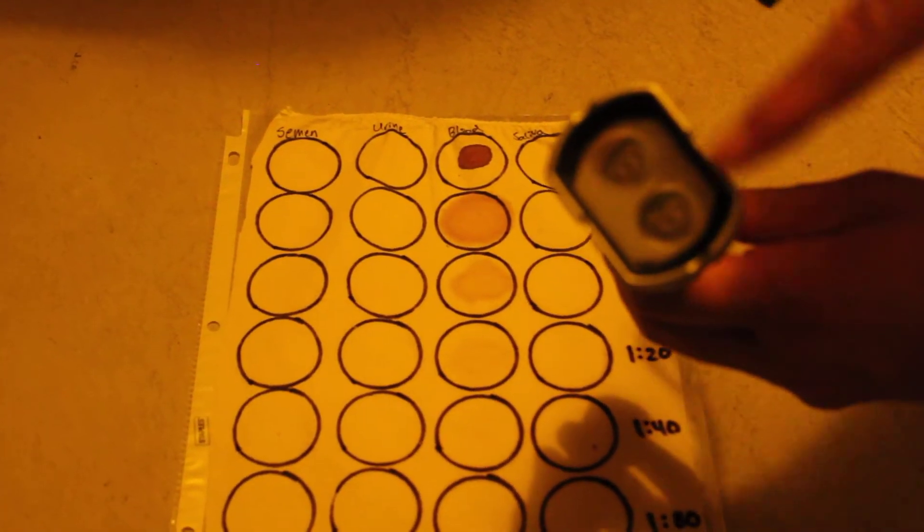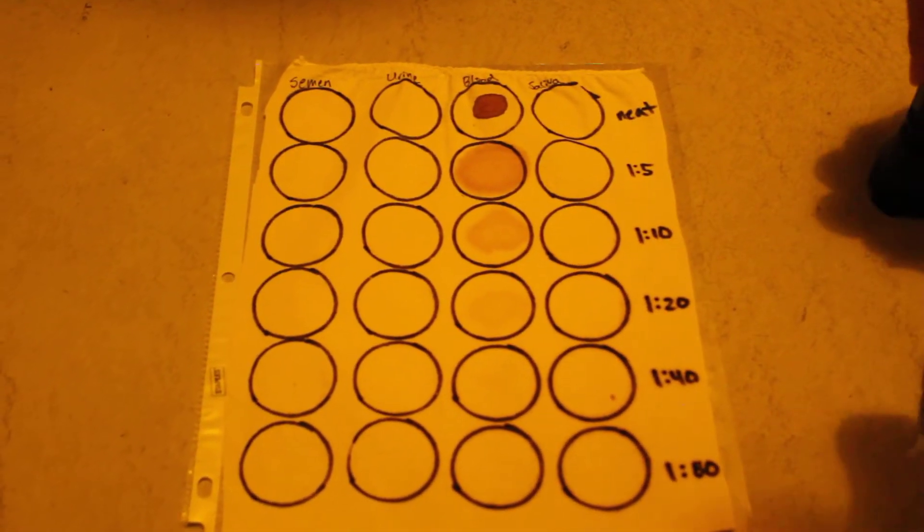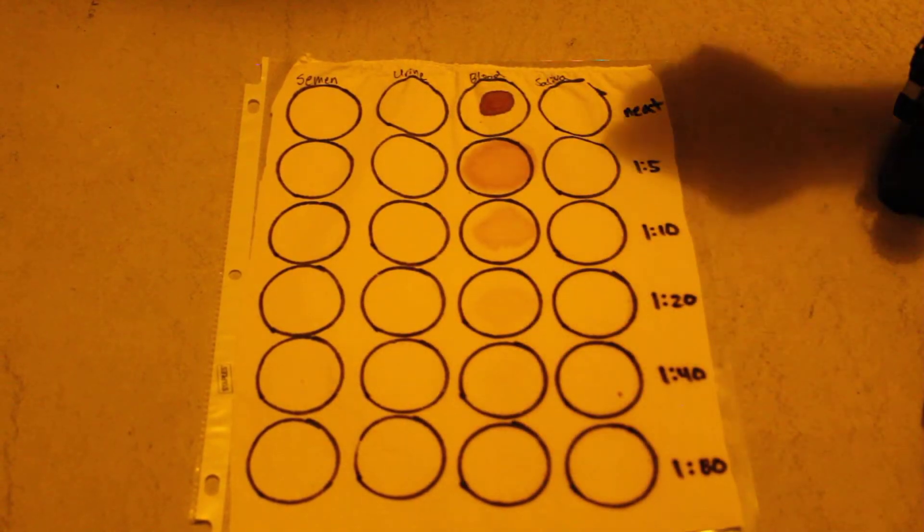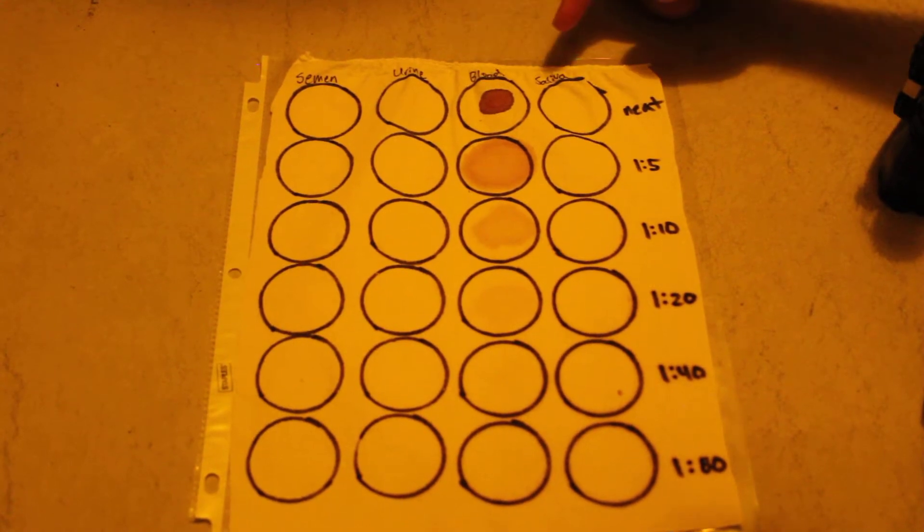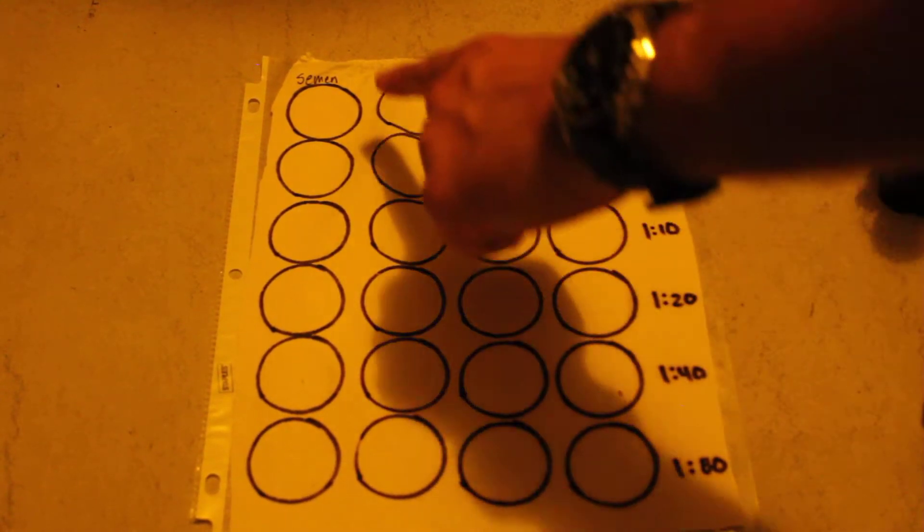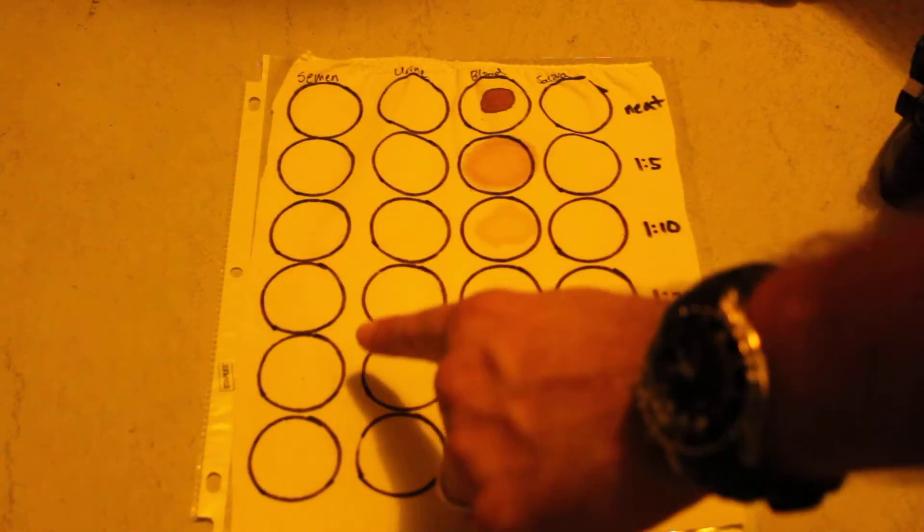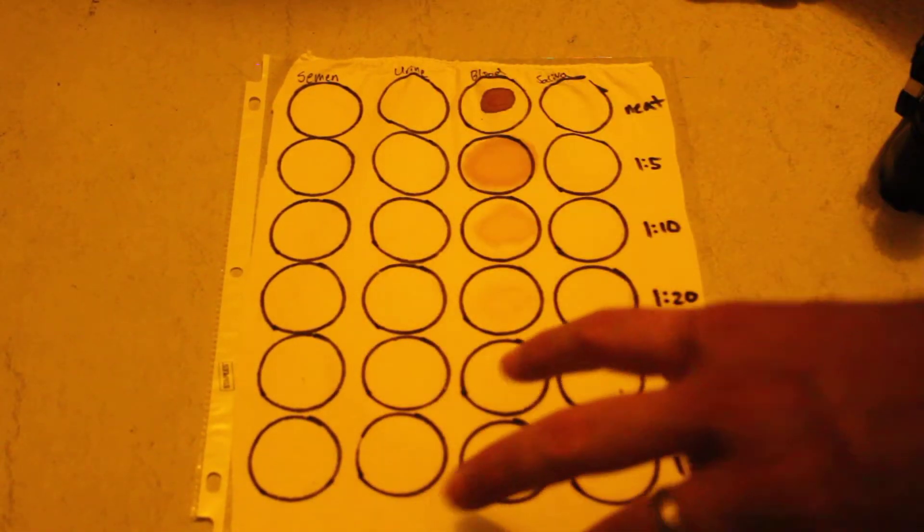It's a one-way big light, even though it has two LEDs. This is a sample from a police department. This is semen, urine, blood, and saliva. As we actually go down this piece of canvas, the materials all get more dilute.